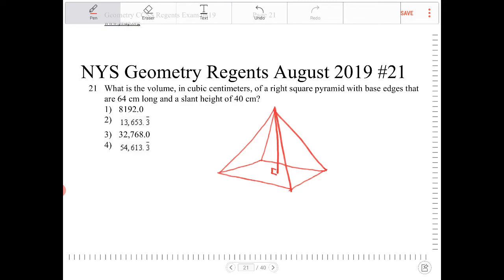So the edges measure 64. I'm going to write that, that's 64. And then it says here that the slant height is 40 centimeters. So the slant height is going to be this length that I have here.